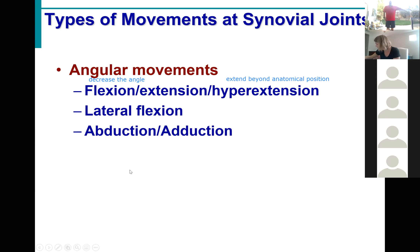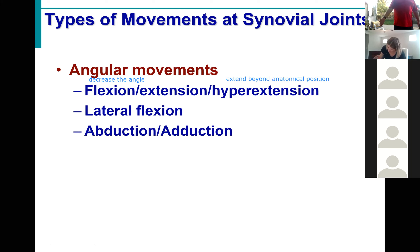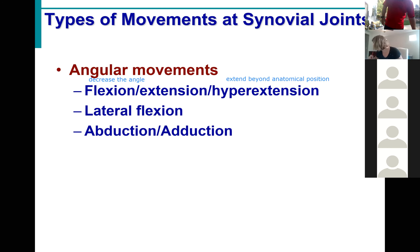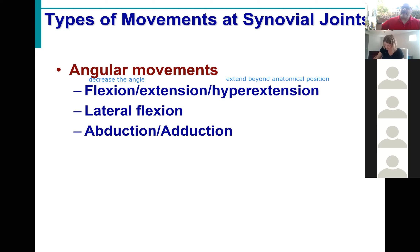Abduction of the arm — what else can I abduct? The leg. What else? I can abduct my hand — when I'm in anatomical position I can move my hand away from the midline. The hand itself has a midline so I can abduct my fingers. Abduct my fingers, abduct my hand, abduct my arm. If someone abducts somebody you care about, they take them away from you — abduction is movement away from the midline. Toes can also be abducted.